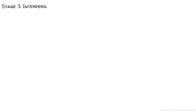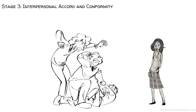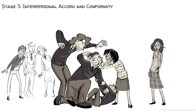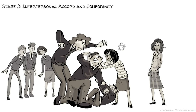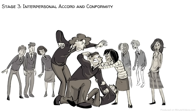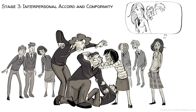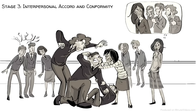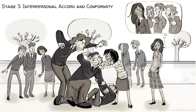At stage three, interpersonal accord and conformity guide our moral judgment. Betty sees the fight and wants to intervene, but when she realizes that all the others are just watching, she decides not to get involved. She wants others to see that she is a good girl who is conforming with the ethics of the community. She asks herself: what do others think of me?